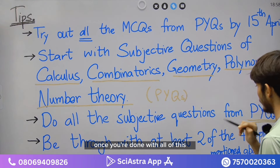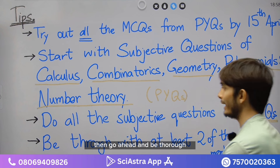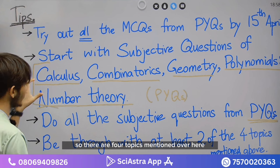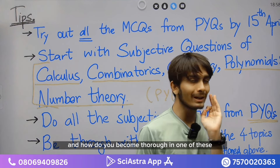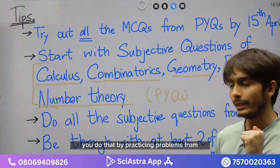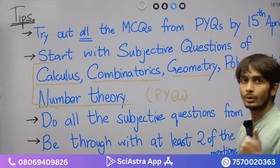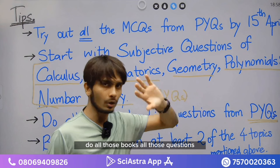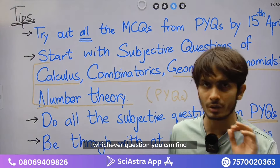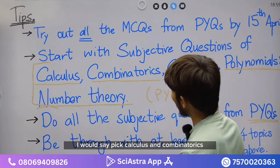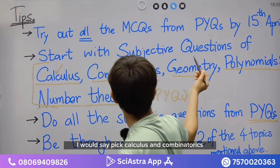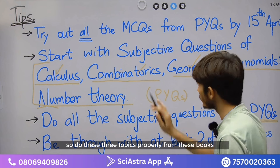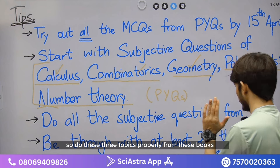Once you're done with all of this, go ahead and be thorough with at least two of the four topics. How do you become thorough in two of these topics? You do that by practicing problems from resources like 'Thrills and Challenges of College Mathematics' and the Tomato Book — do all those questions, whichever you can find, from wherever you can find. Pick any two topics — I would say pick calculus and combinatorics, and if you have time, go for geometry as well. Do these three topics properly from these books.